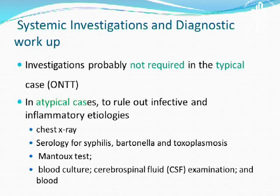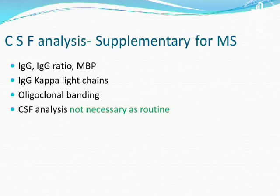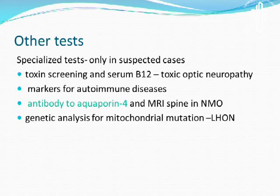Other systemic investigations are required when the presentation is atypical. In most typical cases, these additional investigations are not required. However, if looking for an infective cause, it must be ruled out by various tests. CSF analysis is also a supplementary support for diagnosis of MS, but is generally not required routinely. For toxic optic neuropathy or to rule out NMO, genetic analysis may also be done.